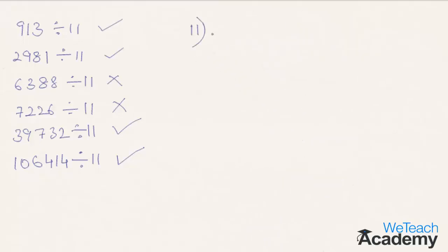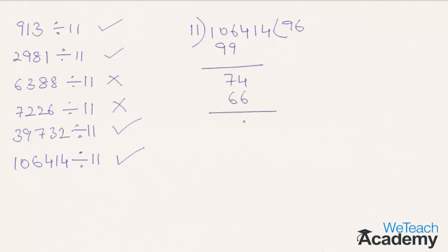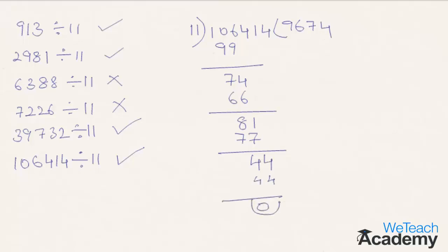Coming to the next number, 16414. 11 times 9 is 99, and the difference we get is 7. Bringing down the next digit 4, we get 74, and 11 times 6 is 66. We get difference 8. Bringing down the next digit 1, we get 81, and 11 times 7 is 77. We get difference 4. Bringing down the next digit 4, we get 44, and 11 times 4 is 44. So we get remainder 0, and the given number is exactly divisible by 11.